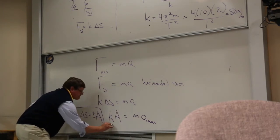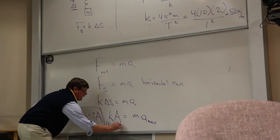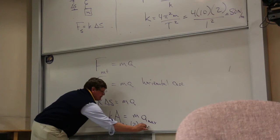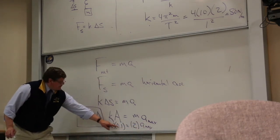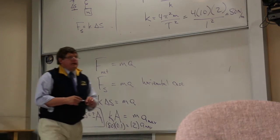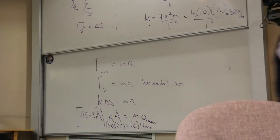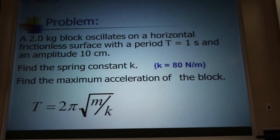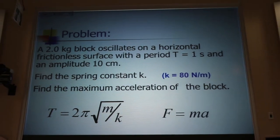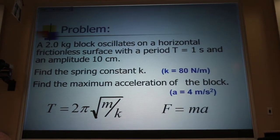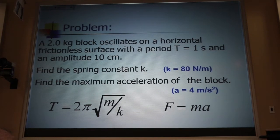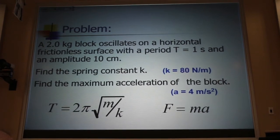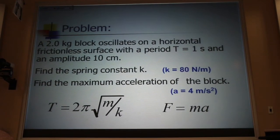Now I can solve for my maximum acceleration. This we said was 80. This we said was 0.1. The mass was 2. 80 times 0.1 is 8. Divide that by 2, and you get 4. So we use this formula to find k, and we got a value of 80. We use this formula to find a, and we found a value of 4.